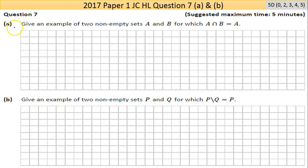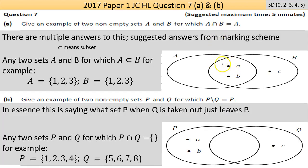Now, sets question. Part A says give an example of two non-empty sets A and B for which A intersection B equals A. So what's common to A and B is the same as the set A. If you think it through, that means whatever is in A intersection B is all that's in A. If I show that by diagram here it may hopefully make sense.